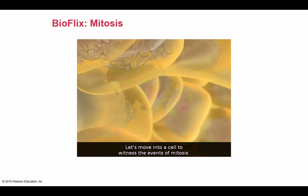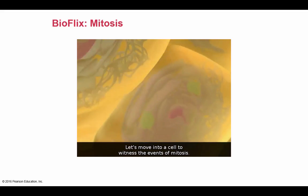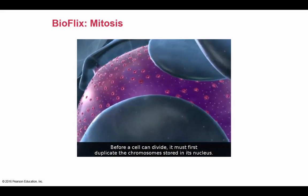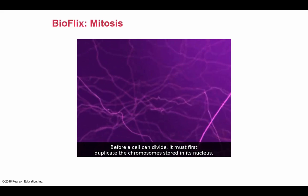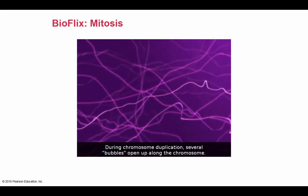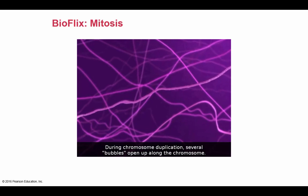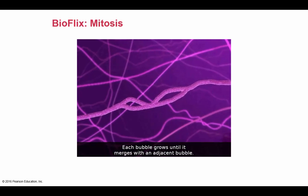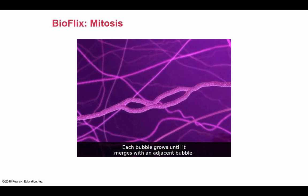Let's move into a cell to witness the events of mitosis. Before a cell can divide, it must first duplicate the chromosomes stored in its nucleus. During chromosome duplication, several bubbles open up along the chromosome. Each bubble grows until it merges with an adjacent bubble.